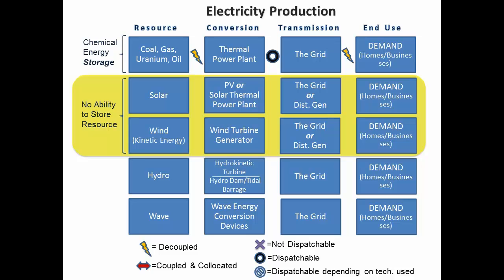With photovoltaics or generally a solar thermal power plant, you can either put it on the grid just like a conventional thermal power plant or use it in a distributed generation application. In summary for solar, the resource and the conversion are both coupled and co-located. You can't take sunlight from point A to point B without some kind of laser or energy beam — it's got to be converted where you've got it. It's not dispatchable, with the exception of some solar thermal storage technologies. If you're putting it on the grid, then transmission is decoupled, but in a distributed generation application the transmission and end use are coupled and co-located — you would be extracting, converting, and using the resource at the same site.